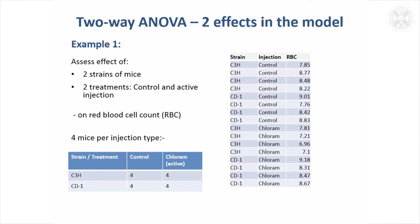I want to move on now to two-way ANOVA. As you've probably guessed, rather than having one grouping in the model, we're now going to think about models that have got two groupings, and this example would be one where a two-way ANOVA was suitable.